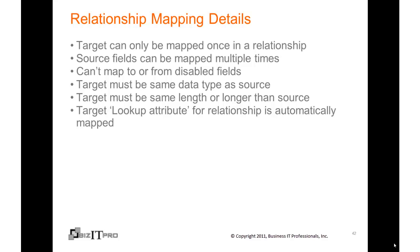You also can't map to or from disabled fields. The target attribute must be the same data type as the source attribute, and the target must also be the same length or longer than the source attribute. When you create a relationship, the target lookup attribute is automatically mapped for you.